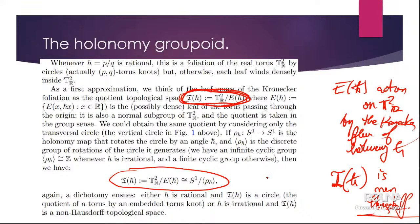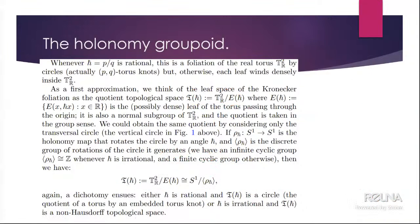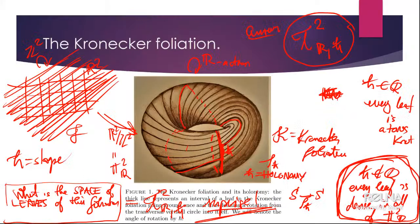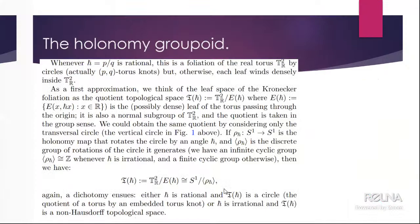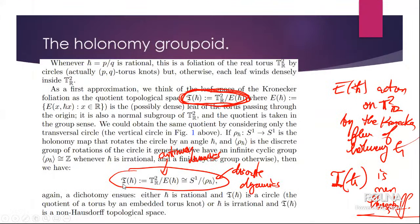It's the same quotient space whether you divide the two-torus by the real flow or divide the transversal circle by the rotation — this is discrete dynamics vs continuous dynamics, but it's the same quotient space. The quotient is non-Hausdorff. So what to do?